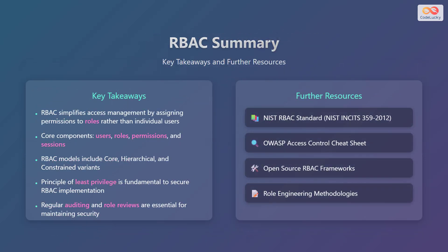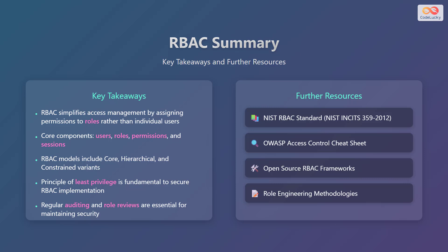To summarize the key points about RBAC: RBAC simplifies access management by assigning permissions to roles instead of individual users. The core components are users, roles, permissions, and sessions. RBAC models include core, hierarchical, and constrained variants. The principle of least privilege is fundamental to secure RBAC implementation, and regular auditing and role reviews are essential for maintaining security. For more in-depth information, resources like the NIST RBAC standard, the OWASP Access Control Cheat Sheet, open-source RBAC frameworks, and role engineering methodologies can be helpful.